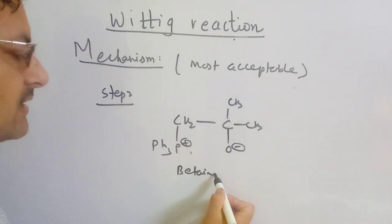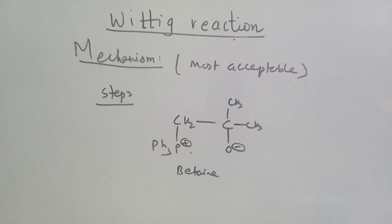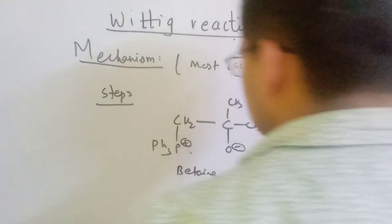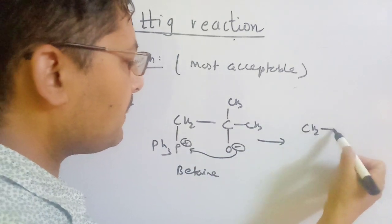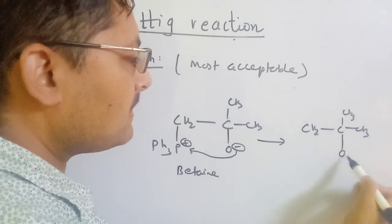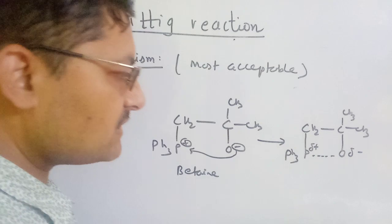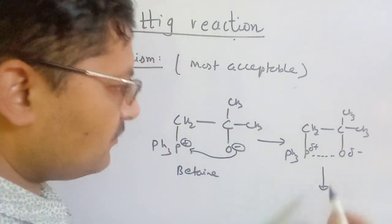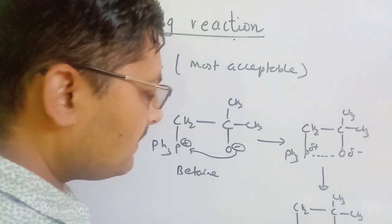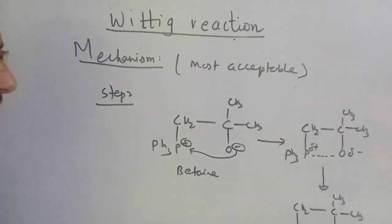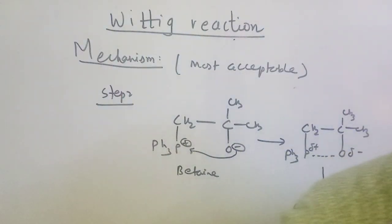Step 2: the oxygen with its negative charge attacks the phosphorus, forming a cyclic compound through a cyclic transient state. This forms a four-membered ring — the oxaphosphetane. In this ring, oxygen is delta minus and phosphorus is delta plus (Ph3P). This cyclic four-membered ring is the key transient state in step 2.